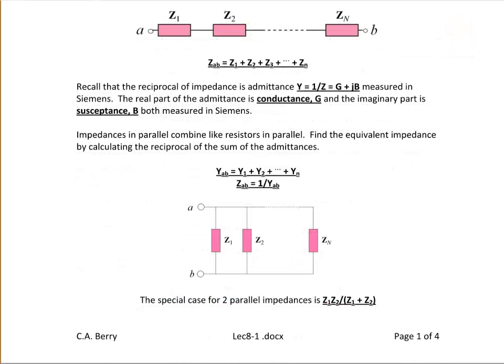Recall that the reciprocal of an impedance is admittance Y, equal to 1 over Z, represented as the sum of the real part G (conductance) and the imaginary part B (susceptance), measured in Siemens or Mhos. Impedances in parallel combine like resistors in parallel — to find the equivalent impedance, you calculate the reciprocal of the sum of the admittances. So if Y_AB equals Y1 plus Y2 plus YN, then Z_AB equals 1 over Y_AB.